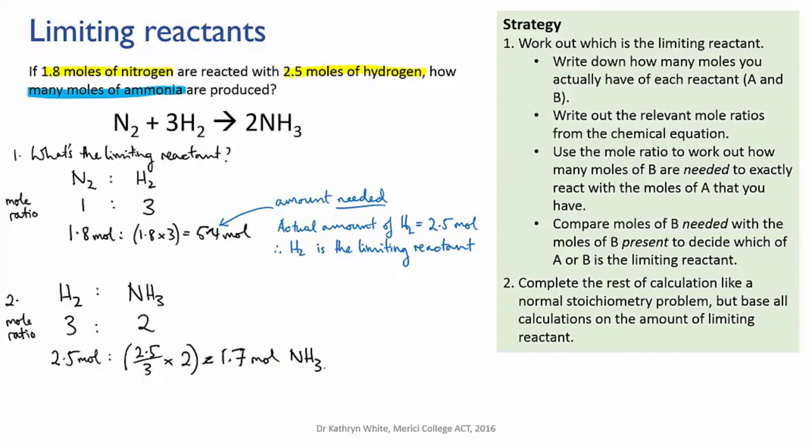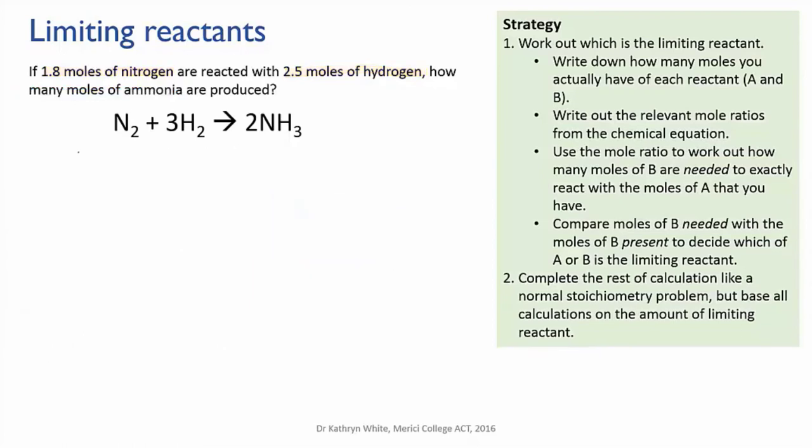Now, I just want to show you that it doesn't matter which reactant you choose when you're working out which one is the limiting reactant. Just now, I started with nitrogen. So let me now do it the other way around and start with hydrogen. I'll write out the mole ratio again. And we know that we have 2.5 moles of hydrogen present. So I'll put that in as the amount that's present.